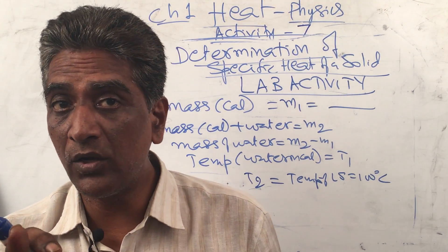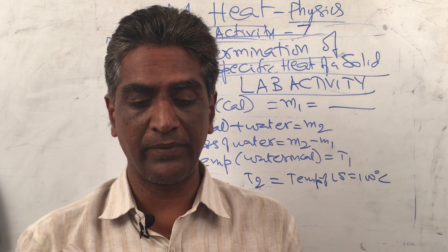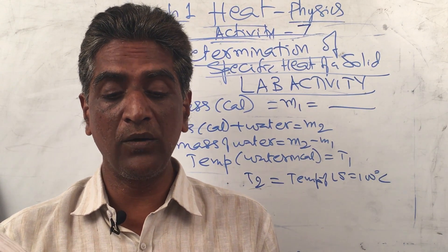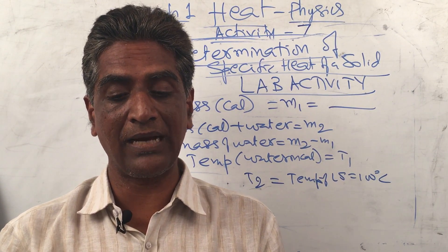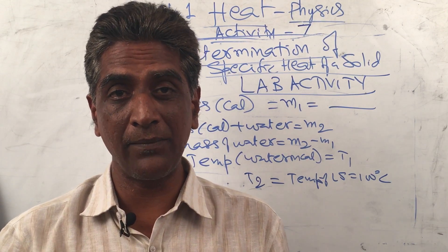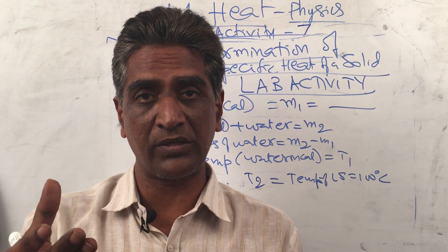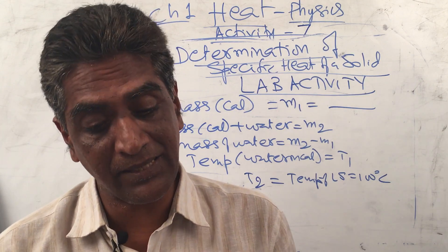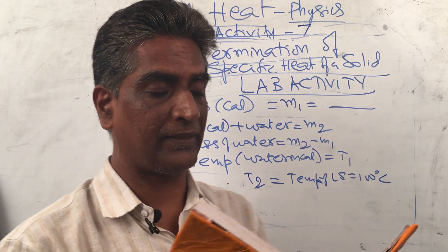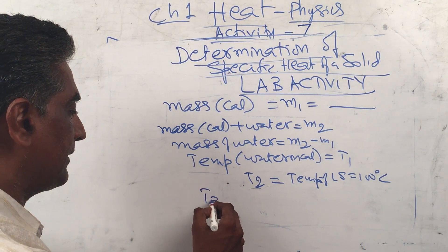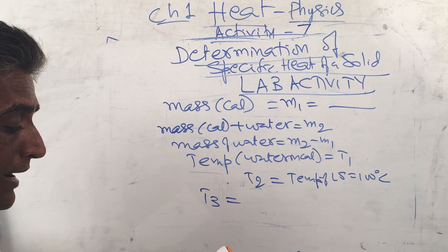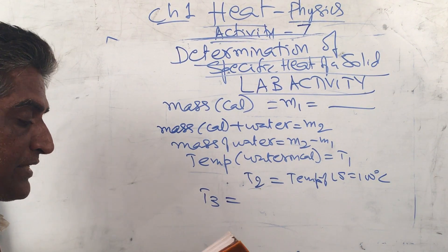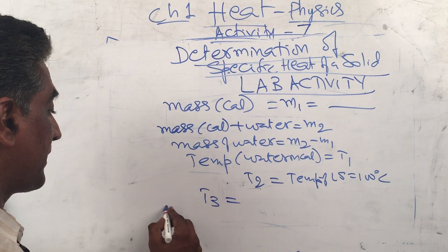Transfer the hot lead shots quickly into the calorimeter with minimum loss of heat. You will notice that the mixture settles to a certain final temperature after some time — measure this temperature as t3. Also measure the mass of the calorimeter along with its contents — water and lead shots — and call it m3.